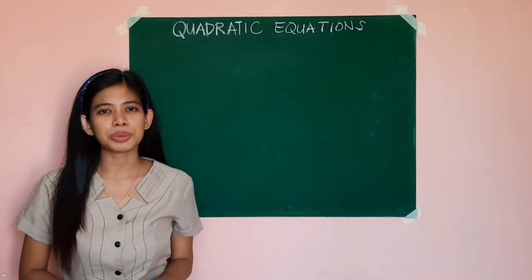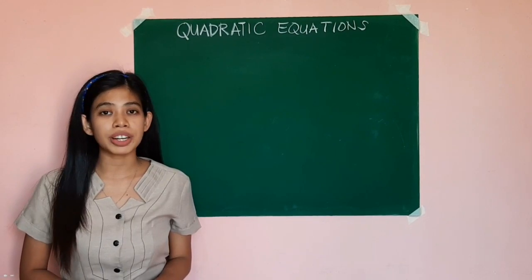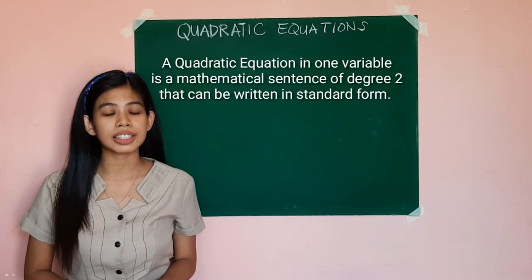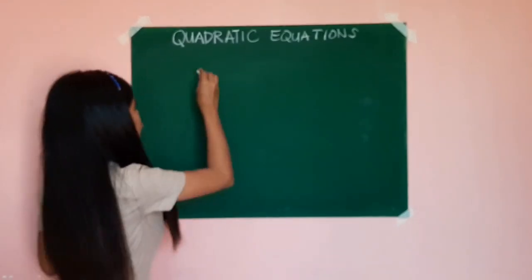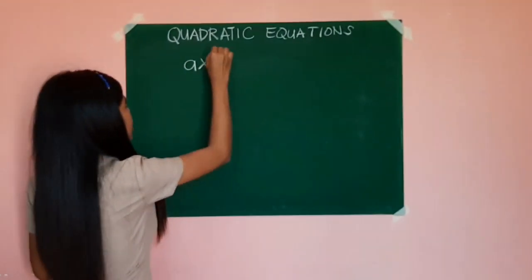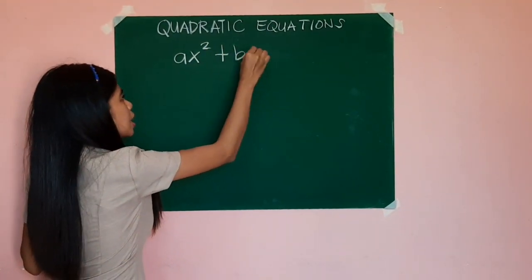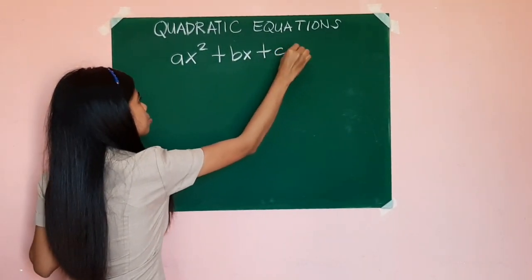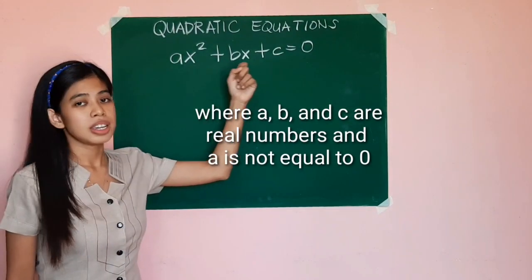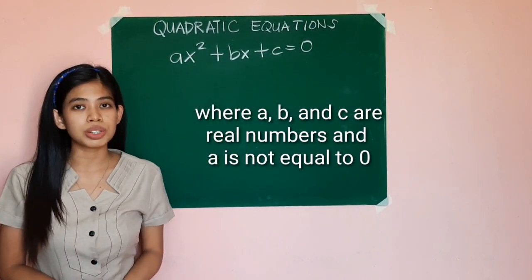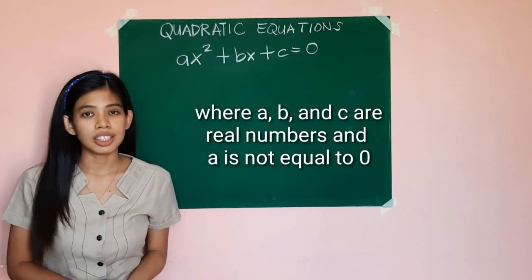So what is a quadratic equation? A quadratic equation in one variable is a mathematical sentence of degree 2 which can be written as ax² + bx + c = 0, where A, B, and C are real numbers and A is not equal to 0.